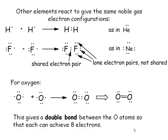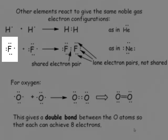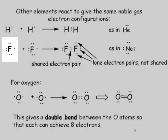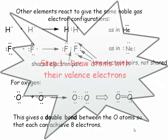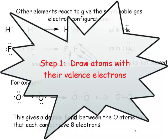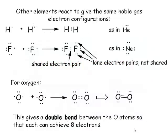Let's take a very simple example: fluorine. It has seven valence electrons. If you were to construct a Lewis structure, the first step is to draw your atom with the number of valence electrons. Here's fluorine with seven valence electrons, and here's a second atom of fluorine with seven valence electrons.